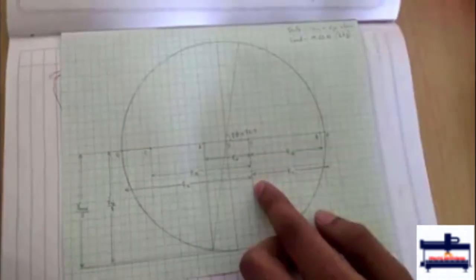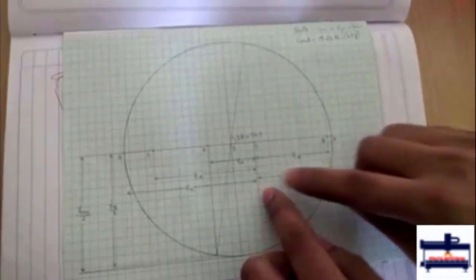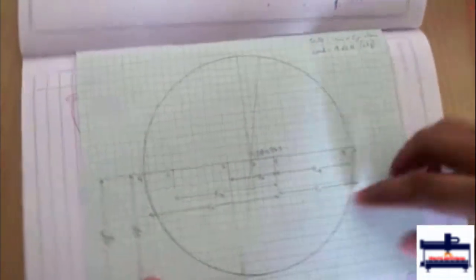Then you complete the circle and the distance from point O till the end of the circle towards the positive side gives you epsilon 1 and towards the negative end of the circle we get epsilon 2.